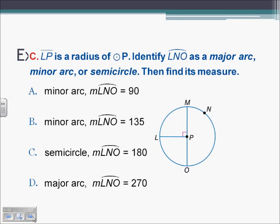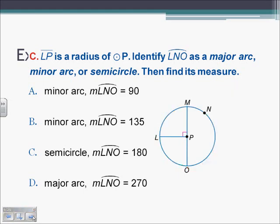LP is a radius of circle P. Identify arc LNO as a major arc, minor arc, or semicircle. Arc LNO goes from L all the way around to N and then finishes at O — it went more than halfway around the circle, so it must be a major arc. Major arcs equal 360 minus their respective minor arcs. The minor arc of LNO is LO, which corresponds to a 90-degree angle, so LO equals 90. Therefore, arc LNO equals 360 minus 90, which is 270 degrees — a major arc. That's answer D.